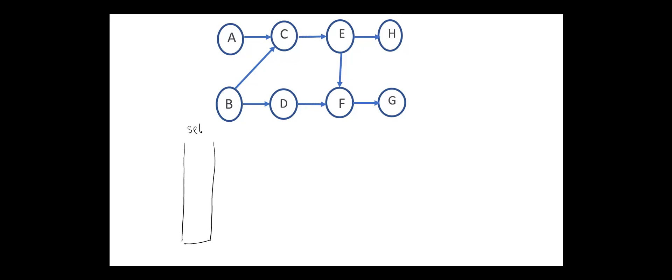To implement the topological sort, we can use two data structures: a set for the visited nodes, and a stack for the sorted nodes. For this graph, we can start from any vertex, for example E.